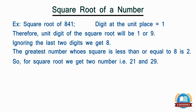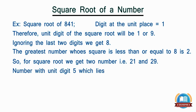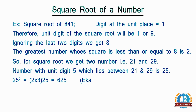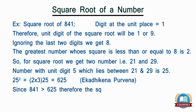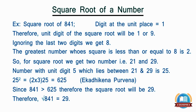Now we have to figure out which one is the actual square root of 841. The number ending with 5 between 21 and 29 is 25. The square of 25 is 625, using the sutra Ekadikena Purvena. Since 841 is greater than 625, the square root of 841 is 29.